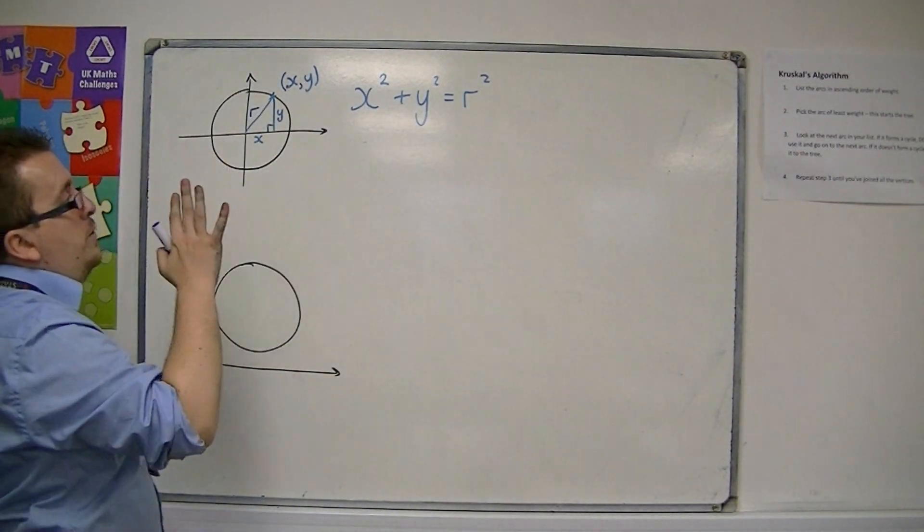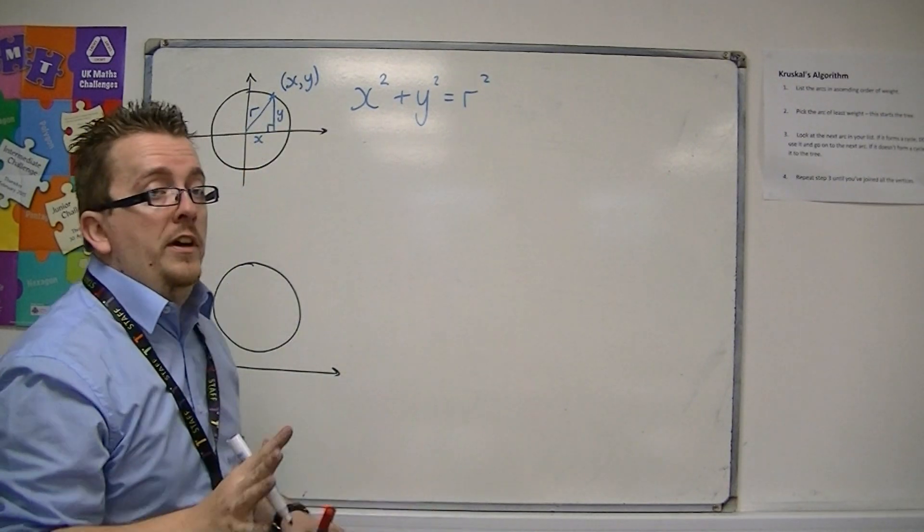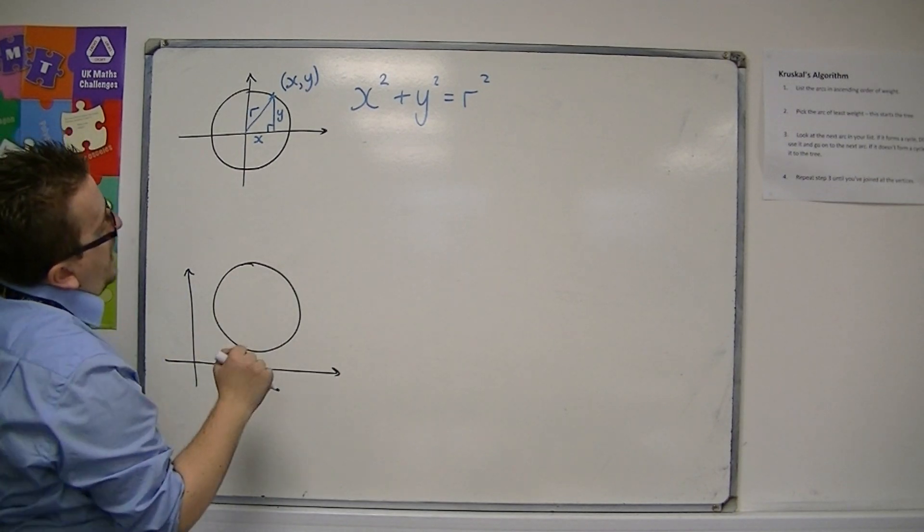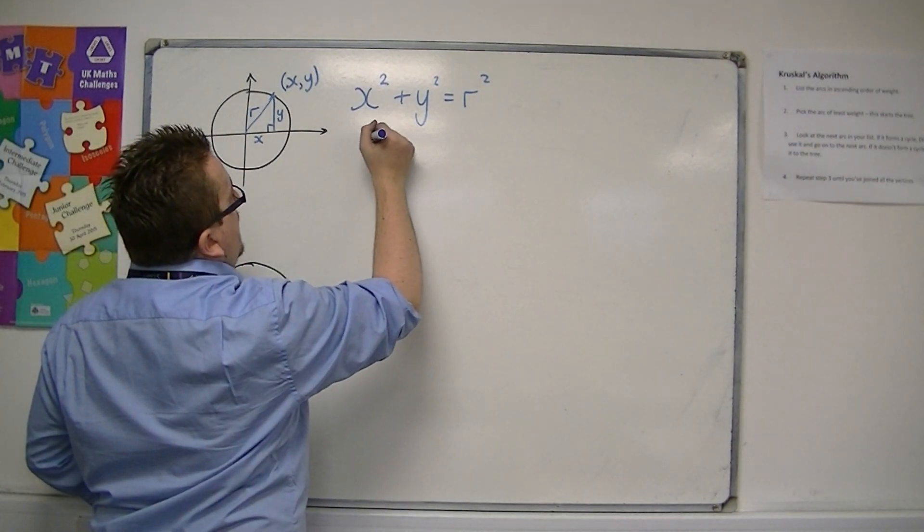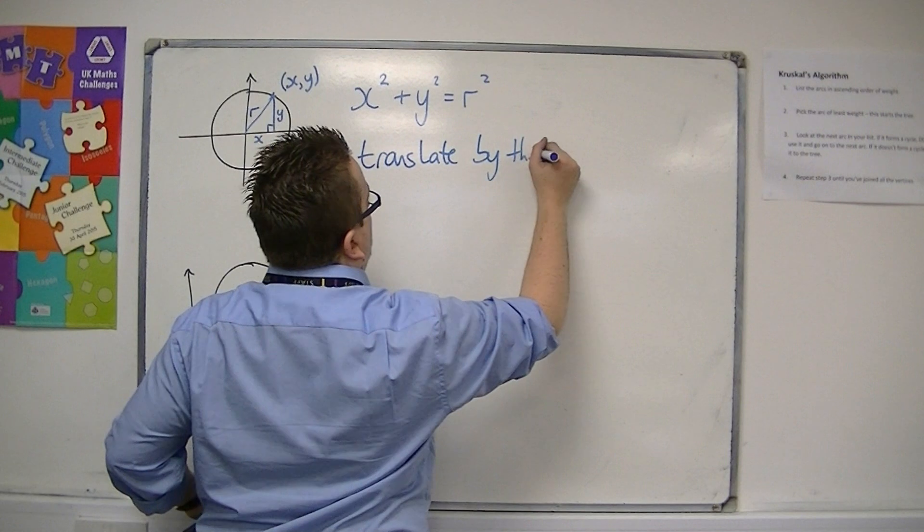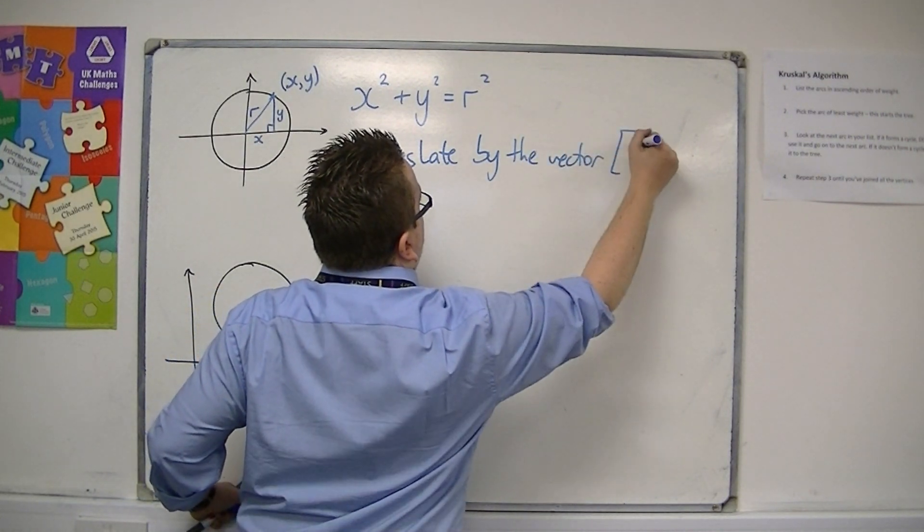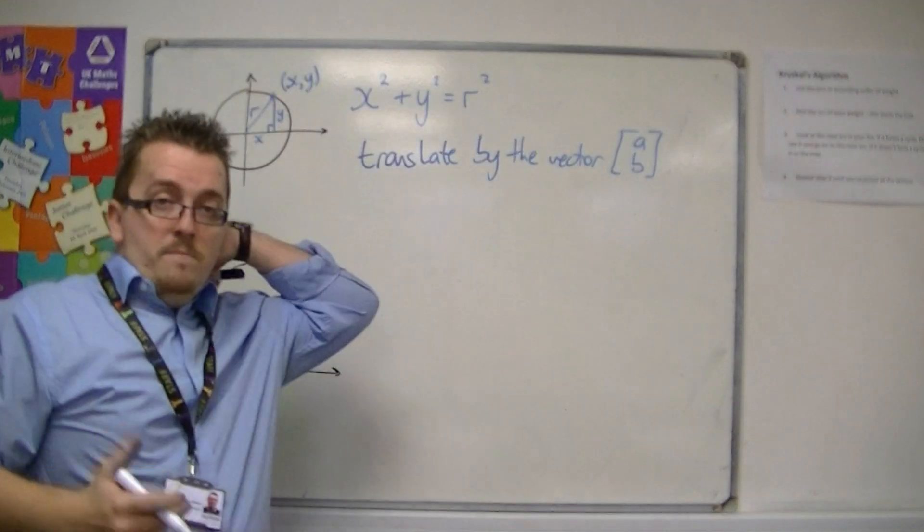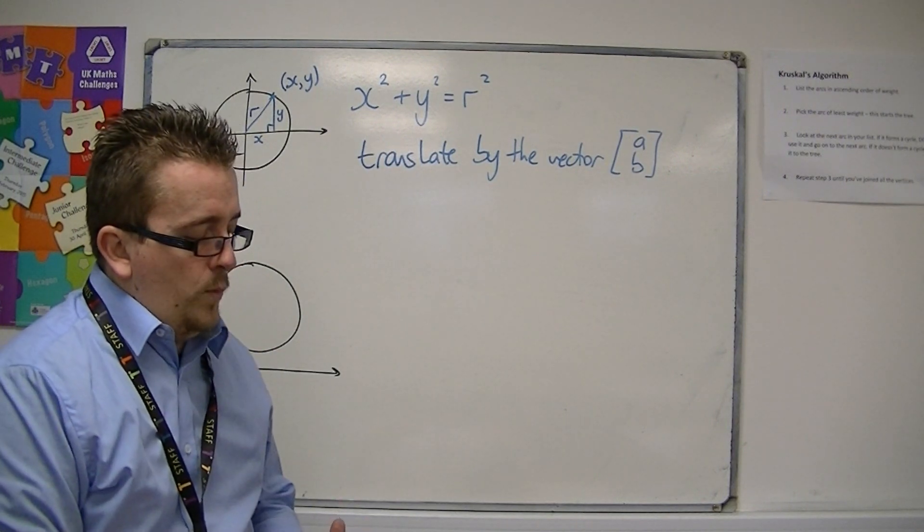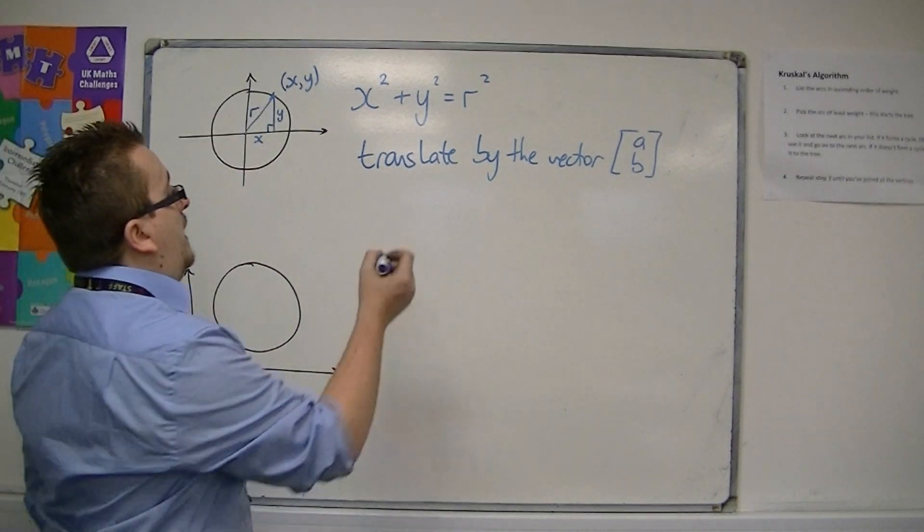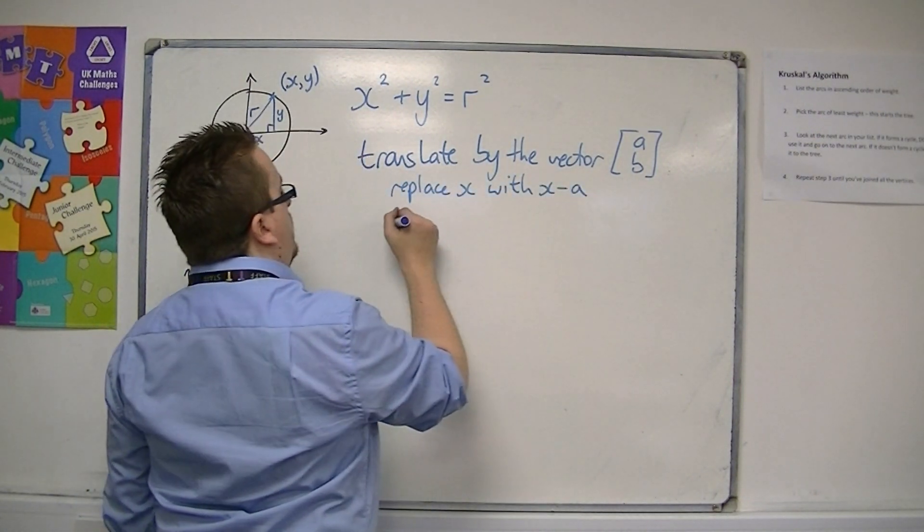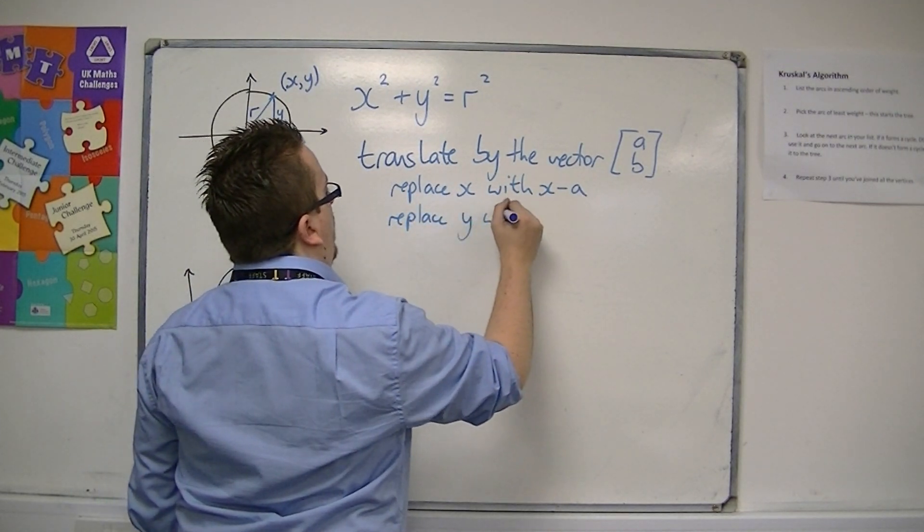Now, if you then decided to move that circle and translate it somewhere else on the grid, if we translate by the vector (a,b), then much like what we did with quadratics and with the cubics, you would replace x with x minus a, and you would replace y with y minus b.